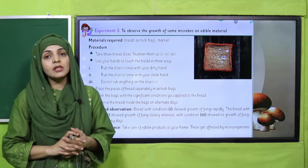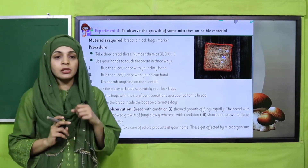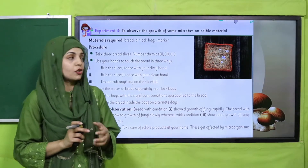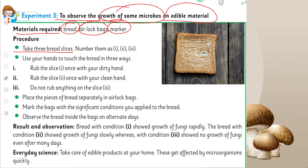I hope everybody has opened Experiment Number Three. Let's look at the instructions: to observe the growth of some microbes on edible material. The materials required are bread, airlock bags, and a marker. The procedure: take three bread slices. Number them as one, two, and three. We also need three airlock bags numbered accordingly.